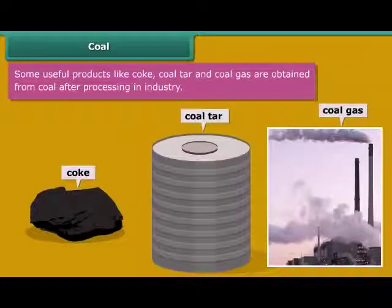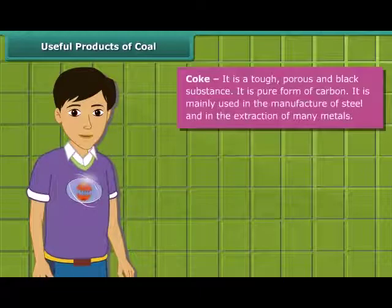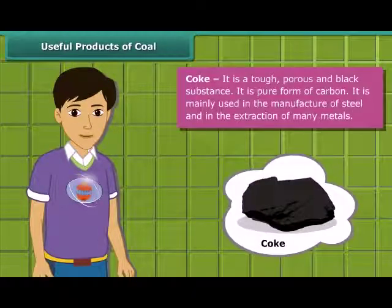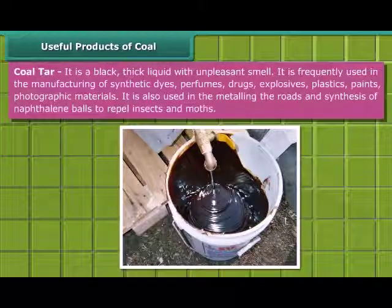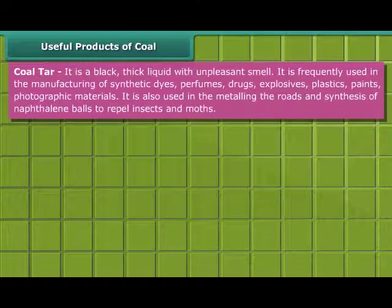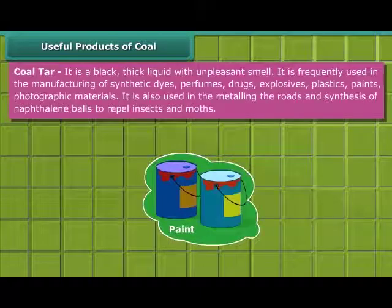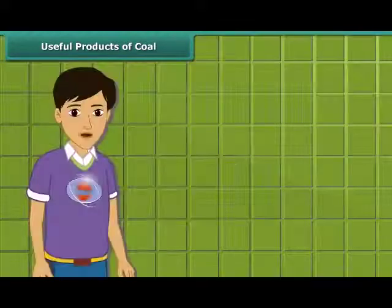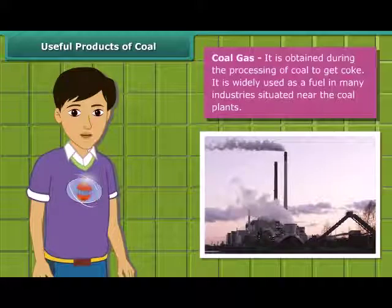Do you know how these byproducts are helpful for us? Coke is a tough, porous and black colored substance, mainly used in the manufacturing of steel and extraction of many metals. Coal tar is a black, thick liquid with an unpleasant smell, frequently used for manufacturing synthetic dyes, perfumes, drugs, explosives, paints, plastics and photographic materials. To obtain coke from coal, coal gas is produced. In many industries located near coal plants, it is used as a fuel.